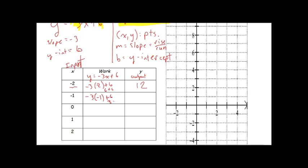Negative 3 times negative 1 is 3, plus 6 is 9. Now 0 is special — it is going to give us our y-intercept because the x-coordinate of this point will be 0. Putting 0 into the equation, we get an output of 6. For x equals 1: negative 3 times 1 plus 6 gives us positive 3. And the last one, x equals 2: negative 3 times 2 plus 6 is negative 6 plus 6, which is 0.